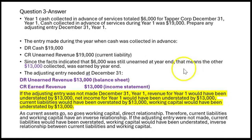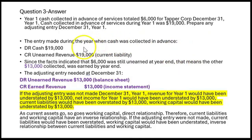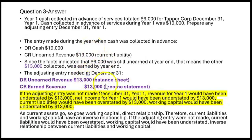So question three was a deferral of revenue where we collected the cash, but when we collected it we hadn't earned it yet. Cash now in June, but income statement later in December when it's earned.